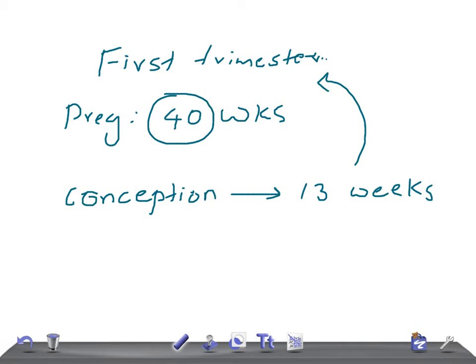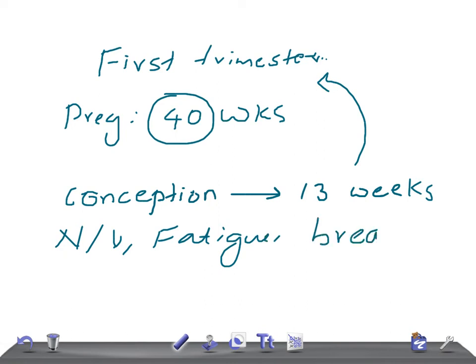What are the signs and symptoms? Remember, a primigravida tends to have more symptoms compared to a multigravida. Normal symptoms include nausea, vomiting, fatigue, breast tenderness with changes in breast condition, and frequent urination.